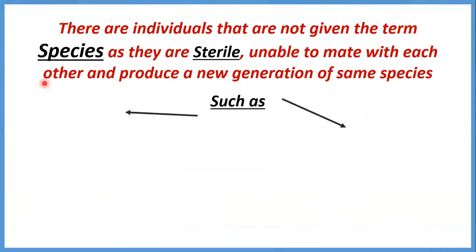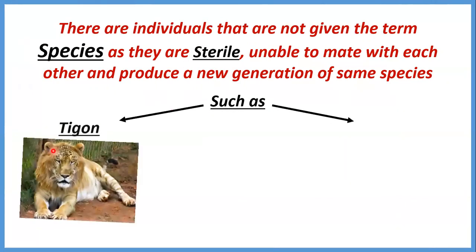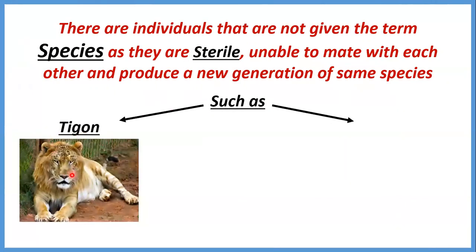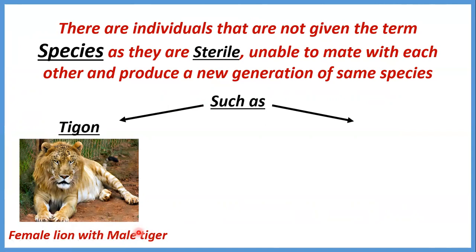زي مثلا الtigon — الtigon ده results from mating between a female lion with a male tiger. دول بيبقوا شبه بعض الtiger واللion شبه بعض، عشان كده بيقدروا يعملوا mating، لكن بيدونا tigon. الtigon ده ما نقدرش نقول عليه species لأنه بيبقى sterile — unable to mate وما يقدرش يدي tigon زيه.